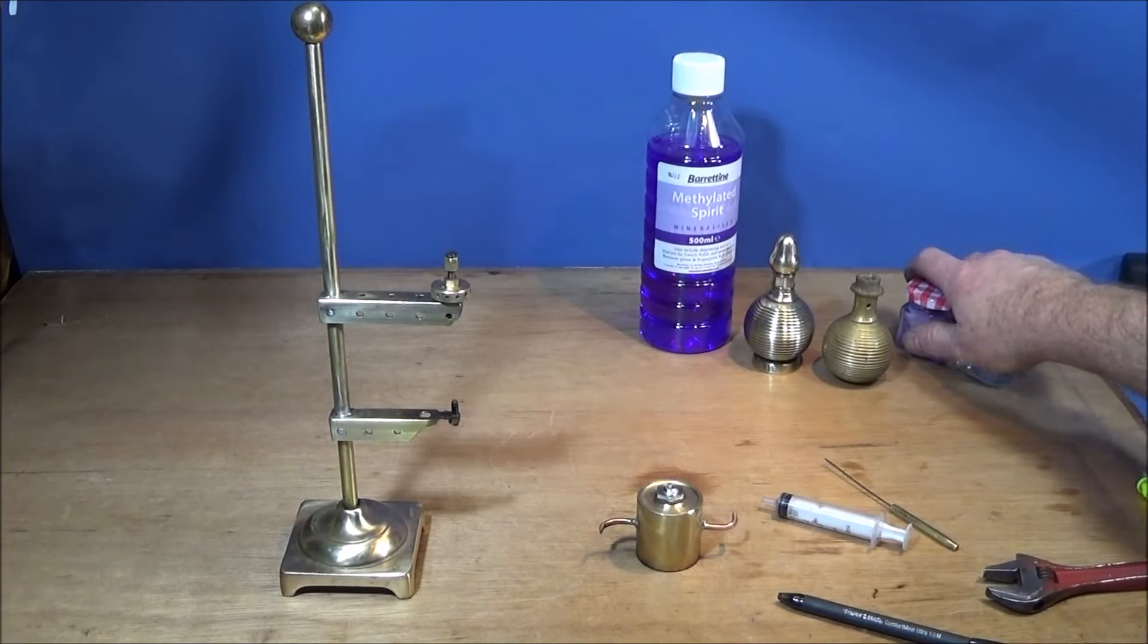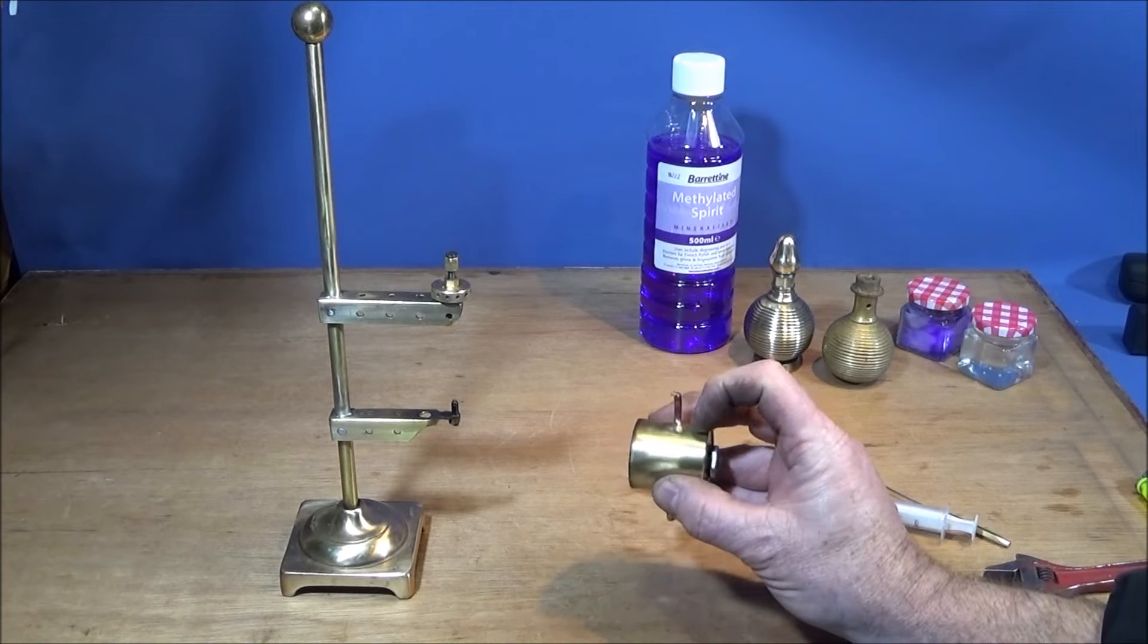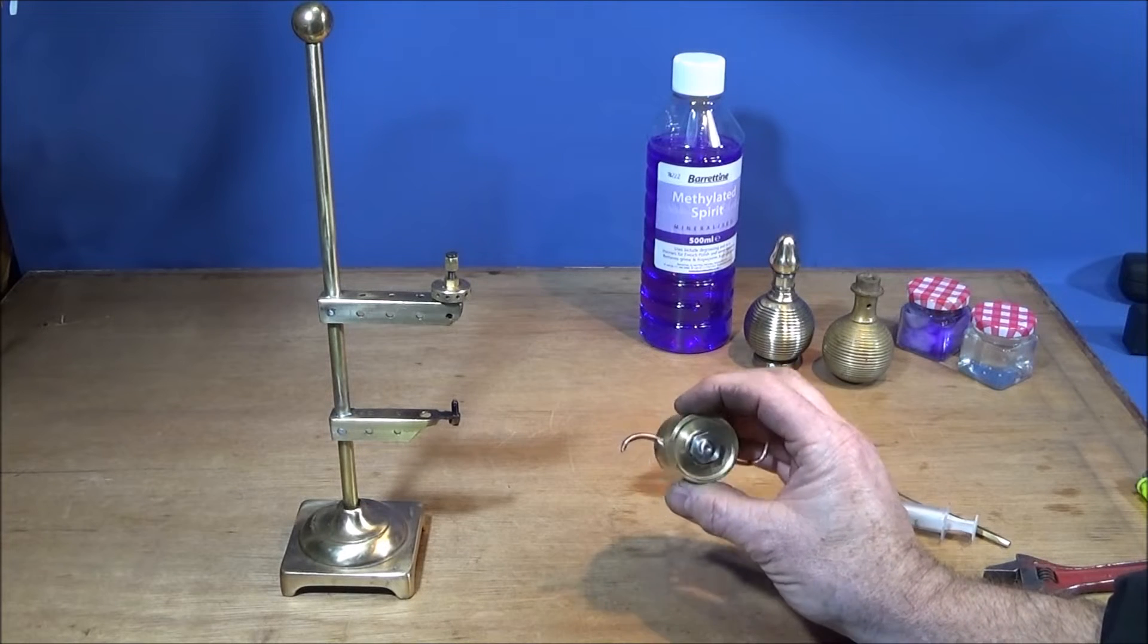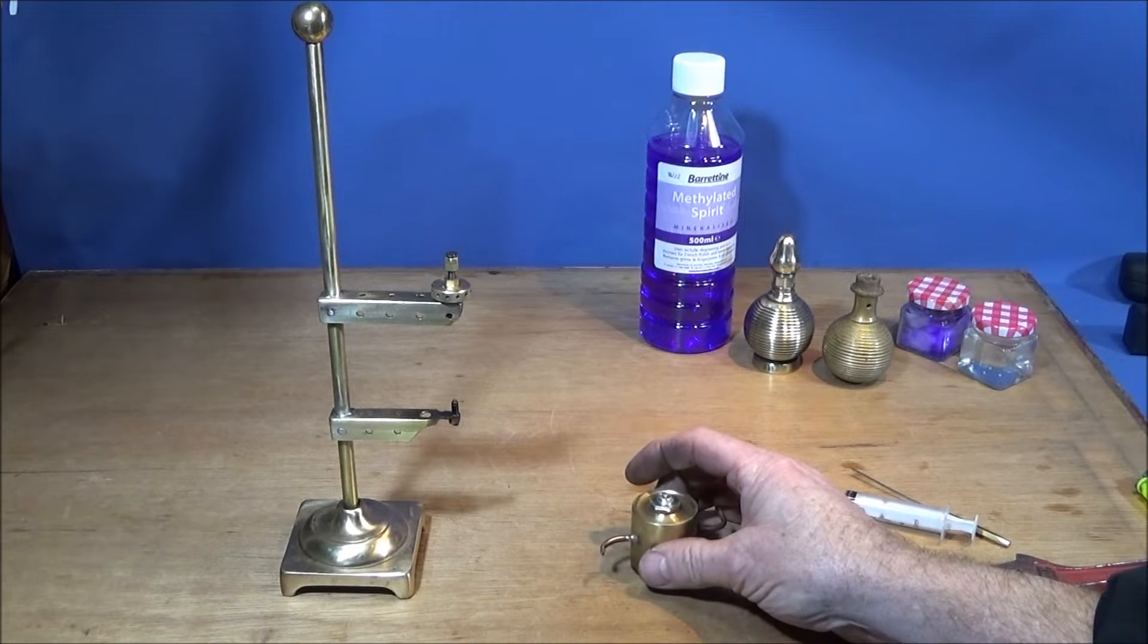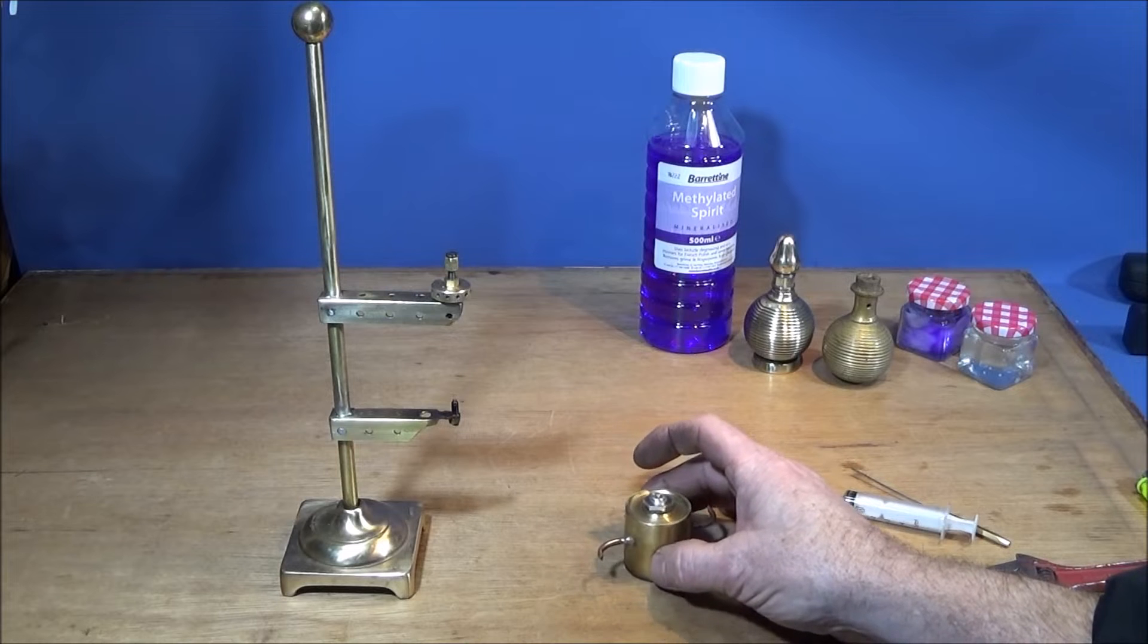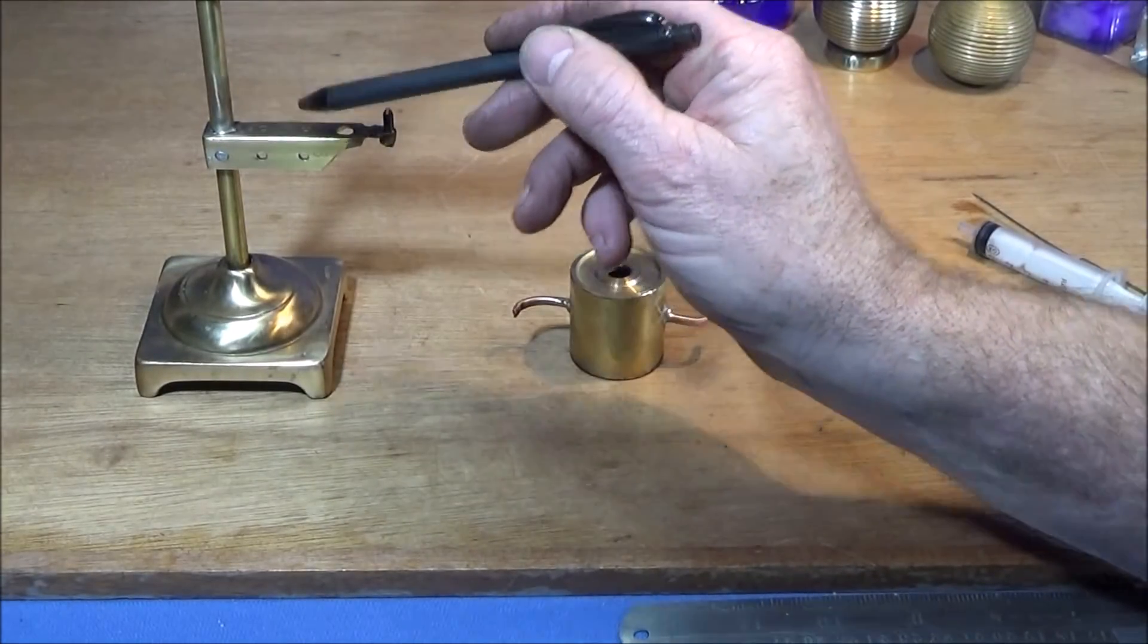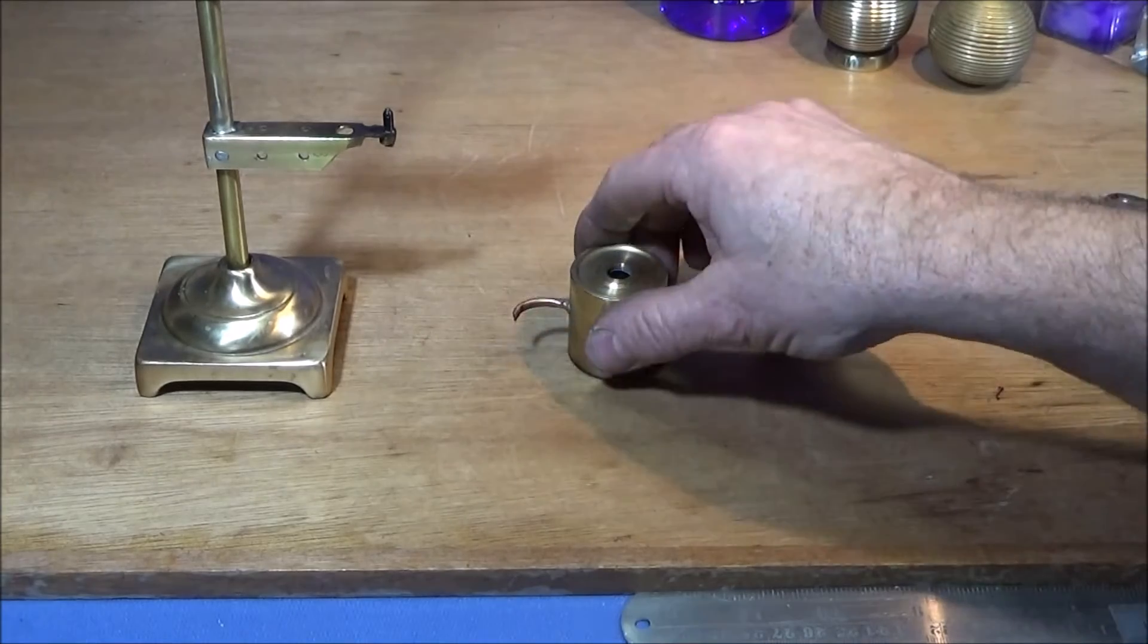You don't really need any specialist equipment at all to actually make these up. You do need to have a torch which will be able to silver solder. I'll use the Bullfinch propane brazing torch and some silver solder which melts or has a melting point around 640 degrees, and that one actually melts nicely with the propane torch. With the stand, I just soldered it together with ordinary lead solder, so that one's dead easy.